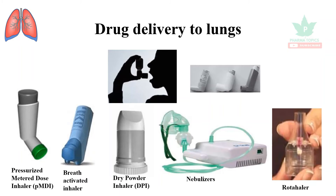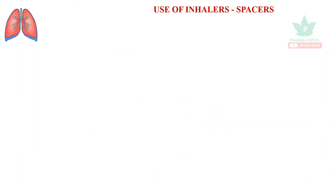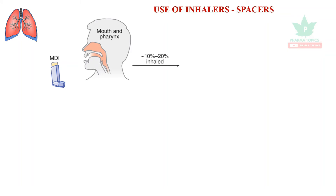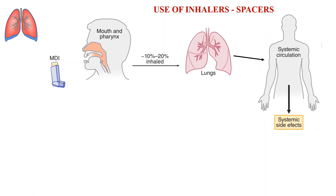In the case of a metered dose inhaler used with spacers, the patient can take the drug through two possible routes: via mouth and via the pharynx. Approximately 10 to 20 percent of the drug is inhaled through the pharynx, reaches the lungs, and then enters the systemic circulation, which can lead to a few adverse effects.